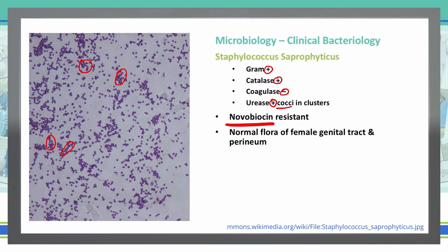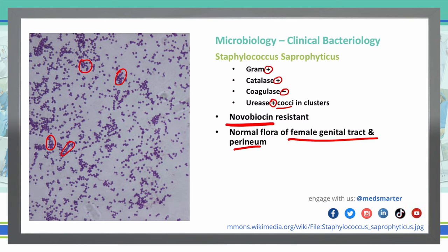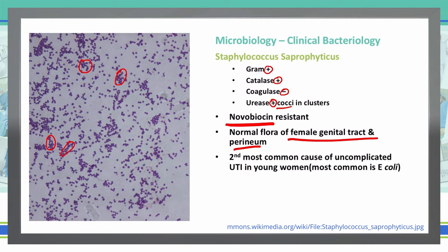Similar to Staph epidermidis, Staph saprophyticus is normally found on the human body, in particular in the female genital tract and perineum. It can be found on swabs in the genital tract area and doesn't typically cause problems unless it can enter the body through a lesion. This is the second most common cause of uncomplicated UTIs in young women, with E. coli being first.